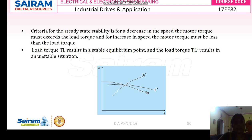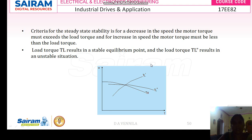T_L is your load torque that results in the equilibrium point, where load torque and motor torque are equal. If the load torque is denoted by T_L double-dash, it leads to an unstable situation. This concludes the first module. Thank you, students.